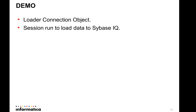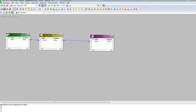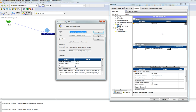Now we'll see a small demonstration of how to use the Sybase IQ External Loader to load into a target. We have a simple flat file source from where we will read and load data into the target IQ database. This is the mapping — it has a flat file source and a target of type Sybase. We then look at the PowerCenter session where we have created a target connection of type loader.